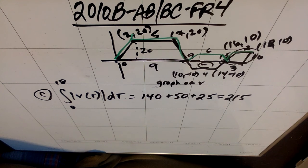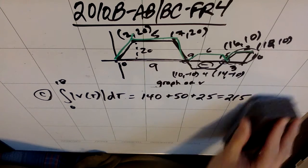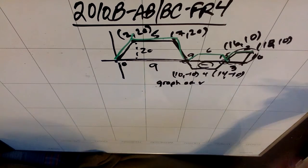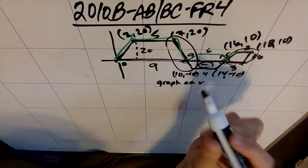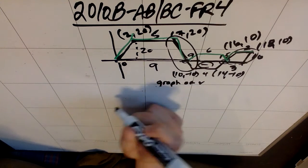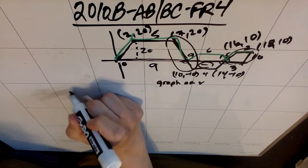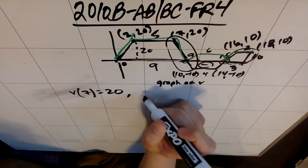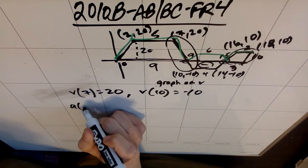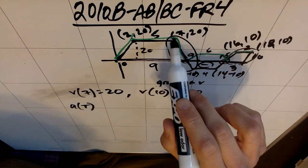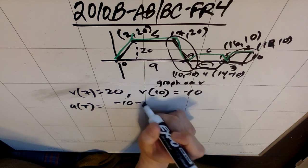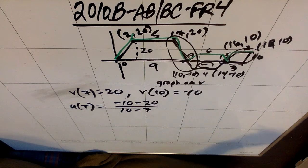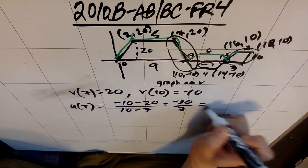Part D: write expressions for the squirrel's acceleration A of T, velocity V of T, and position X of T from building A, valid for the time interval from 7 to 10. We know that V of 7 is 20 and V of 10 is negative 10. Since V of T is linear on this interval, A of T is just the slope of this line: A of T equals (negative 10 minus 20) over (10 minus 7), which is negative 30 over 3, so A of T equals negative 10.